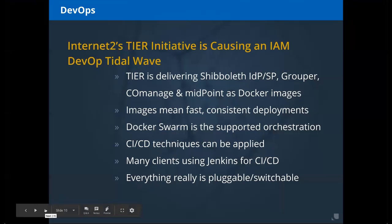Now that we can run and scale these applications, we can use continuous integration and continuous deployment (CI/CD) techniques to deploy configuration changes. Jenkins is an application many clients use for CI/CD — it's a Java-based open source application that makes pipelining the flow of a configuration change all the way into a production system very easy.